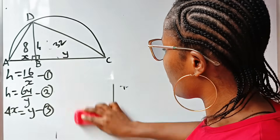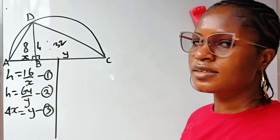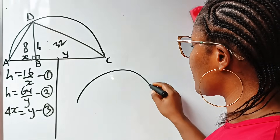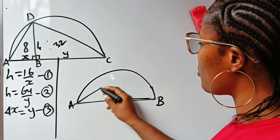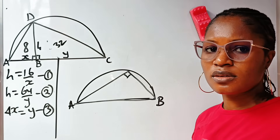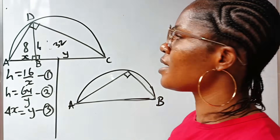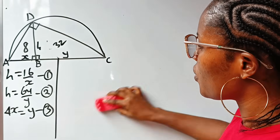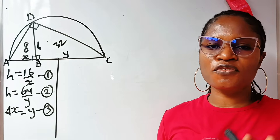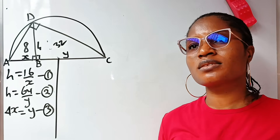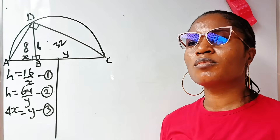Going back to the diagram: triangle ADC contains a right angle. In a semicircle, AC is the diameter, and any angle that AC subtends on the circumference is 90 degrees. So angle D is 90 degrees. If this is the first time you are visiting this channel, you are highly welcome — click the subscription button and turn on your notification bell so you don't miss our videos.